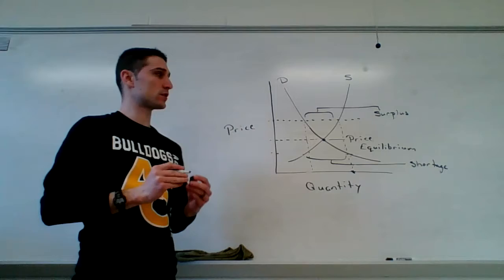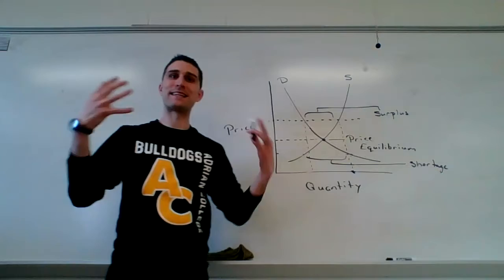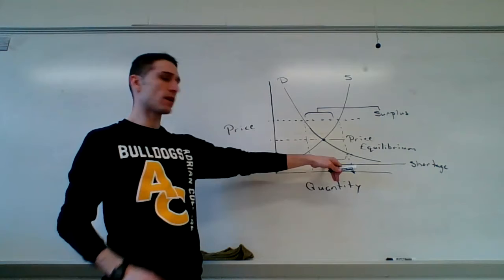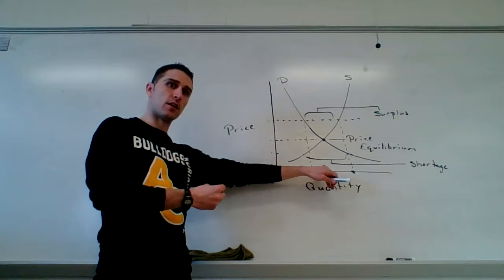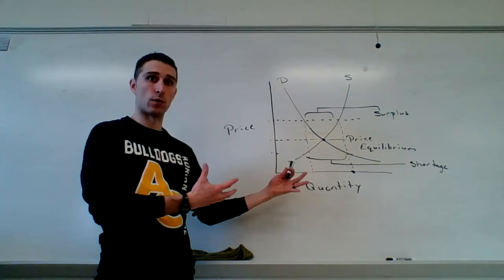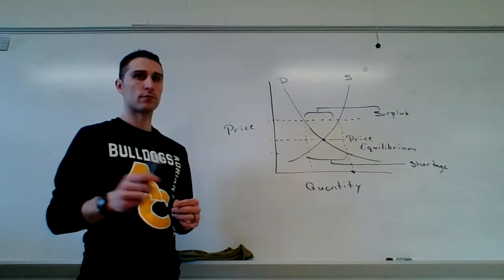Now, notice, both are wasteful. Neither one solves scarcity. In this case, you're wasting resources producing something no one wants, so you have a surplus. That's extra. If we make too much of something, it's waste. We could have used those resources on something else. And here, we have a shortage. The whole issue we're trying to solve is scarcity. If there's not enough of something and people want more of it, we're just making the scarcity worse. So, in both cases, we're not solving the issue of scarcity.